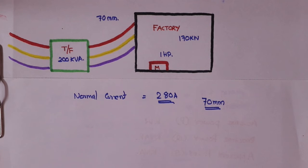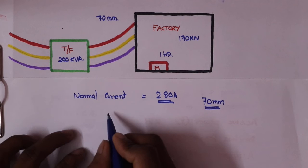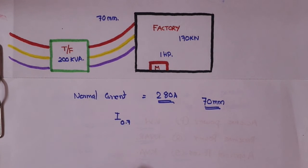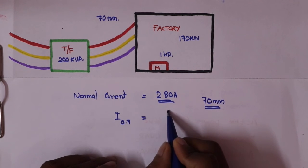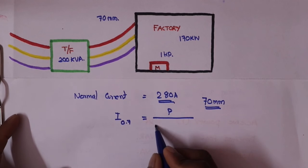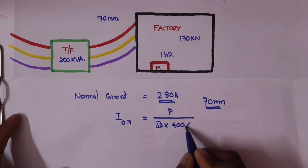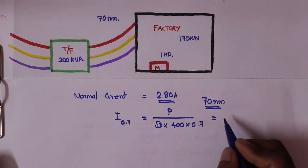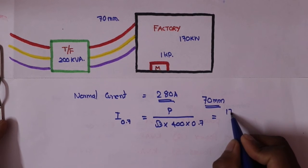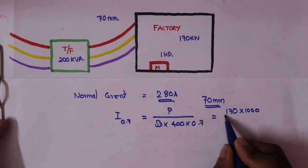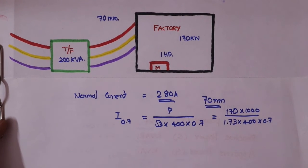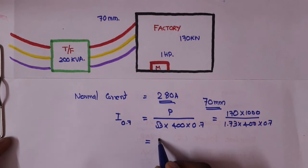Now the power factor is 0.7. The current with power factor 0.7 is: Current equals Power divided by root 3 into 400 into 0.7. Power is 180 kW. Root 3 value is 1.73 into 0.7. This value is 350 amps.